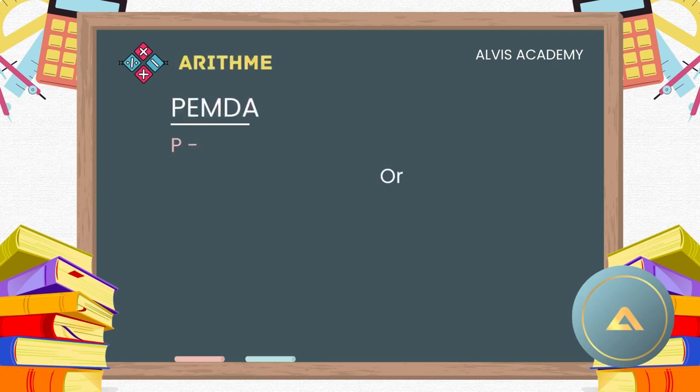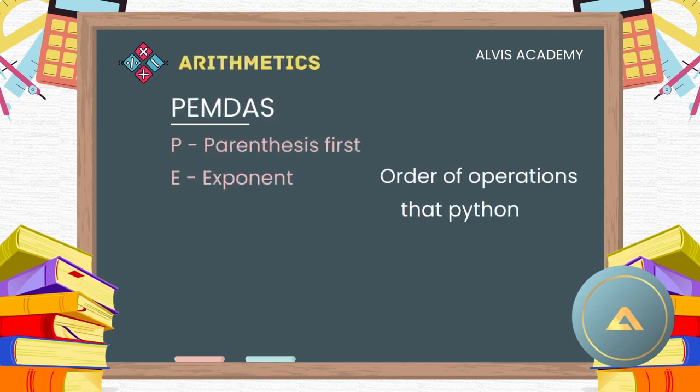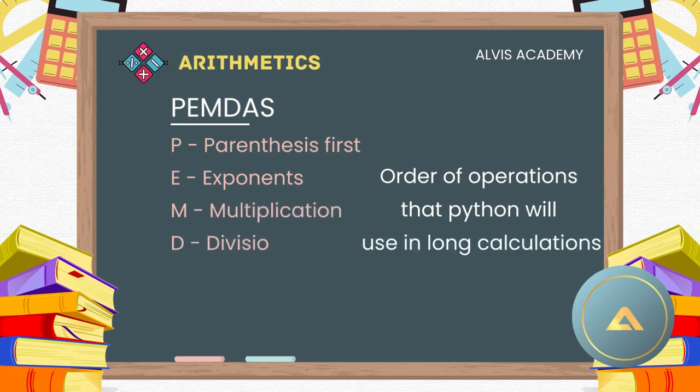The general rule that is used in Python is called PEMDAS. PEMDAS stands for parenthesis first, exponents next, followed by multiplication, then division, then addition, and finally subtraction. That is the order of operations and the rule that Python uses.